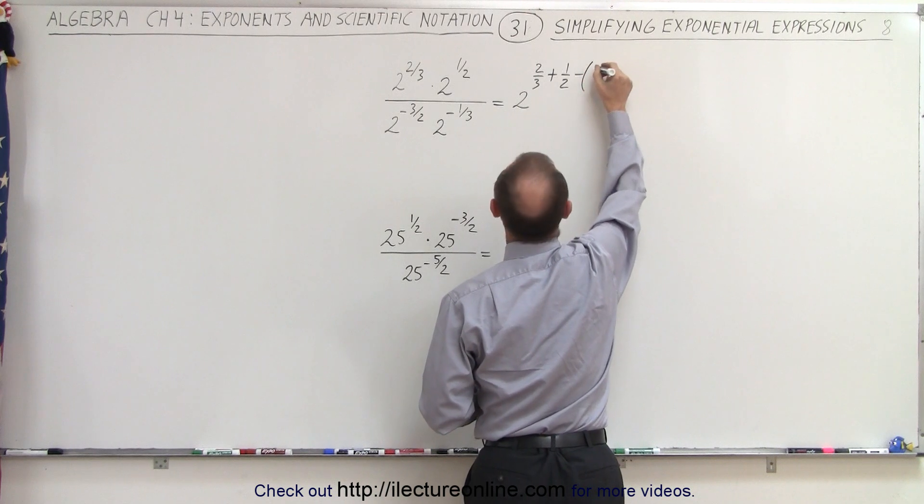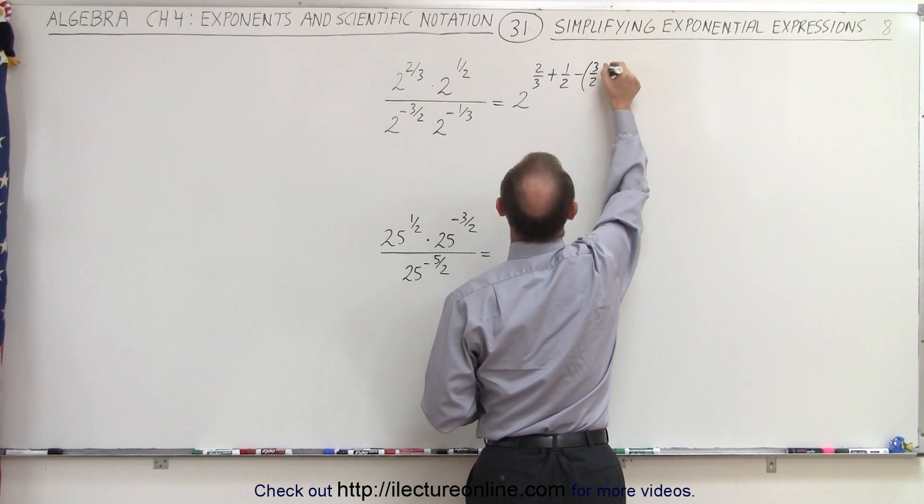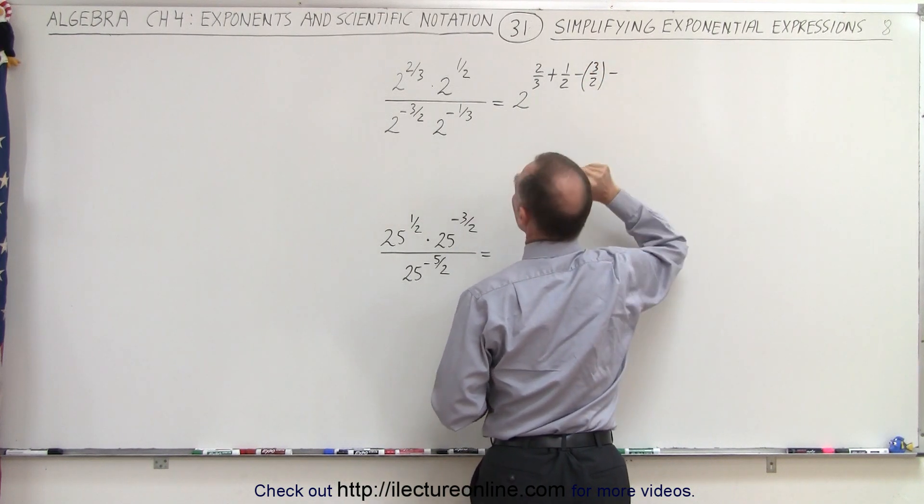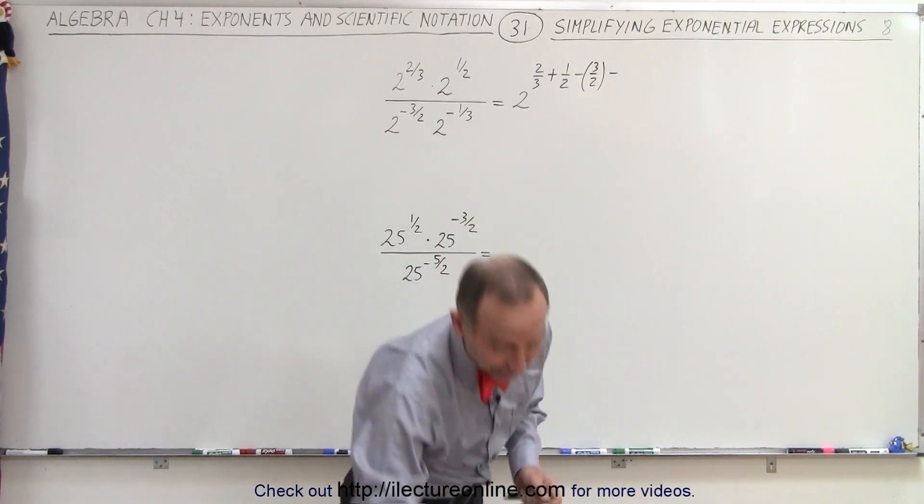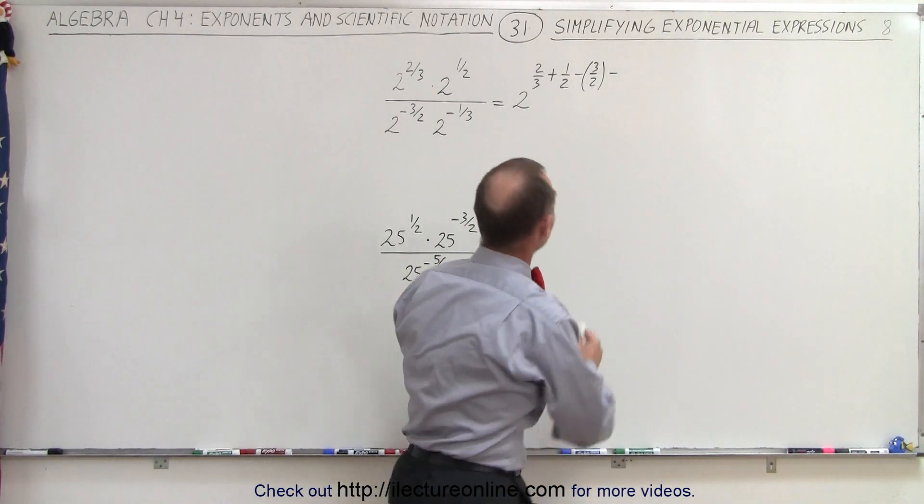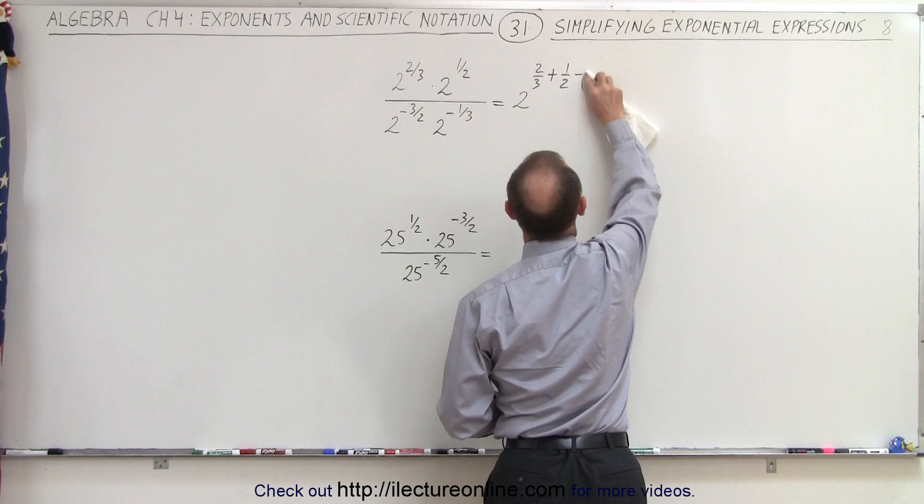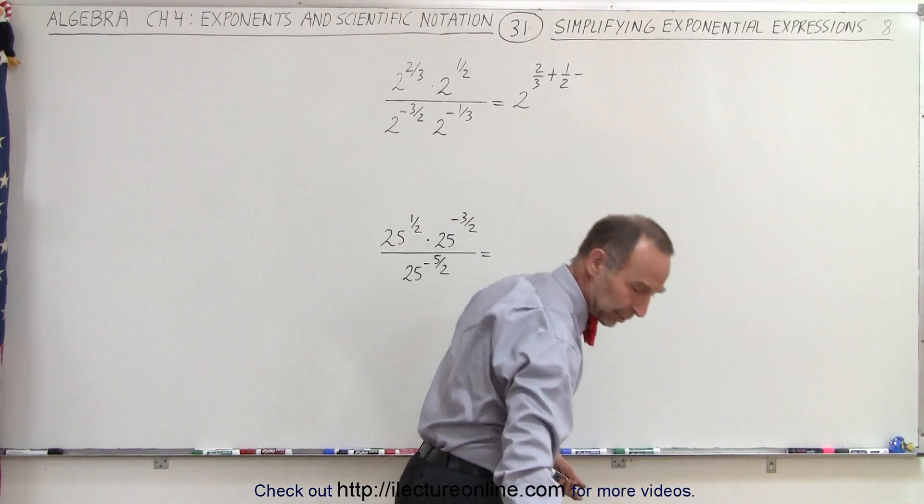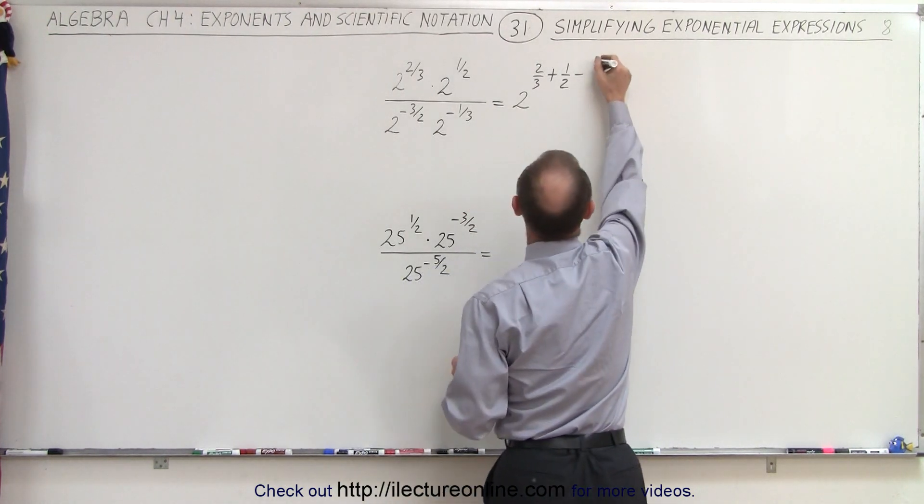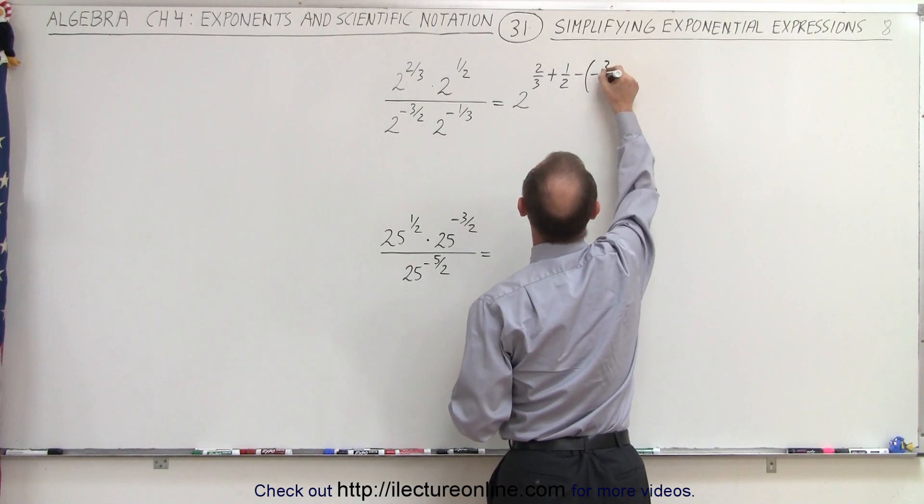So this becomes minus 3 halves and minus, not 3 halves, that's a minus 3 half. Can't make that mistake. Let's take that back here. So it would be the negative of a negative exponent minus 3 halves.